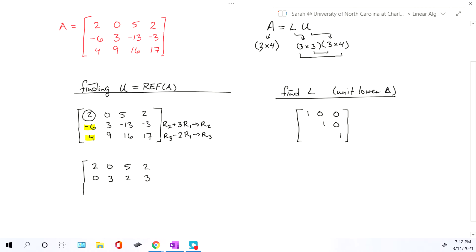Do the same thing for the last row. We'll multiply the top row by 2 and then subtract it. So 4 minus 4 is 0. 9 minus 0 is still 9. 16 minus 10 is 6. And 17 minus 4 is going to be 13.